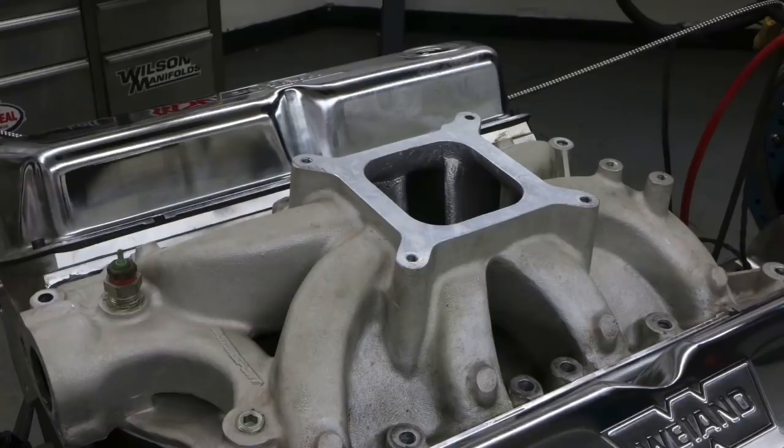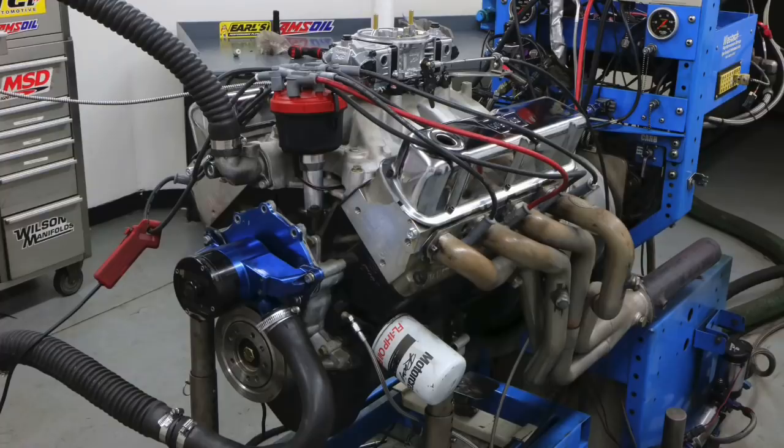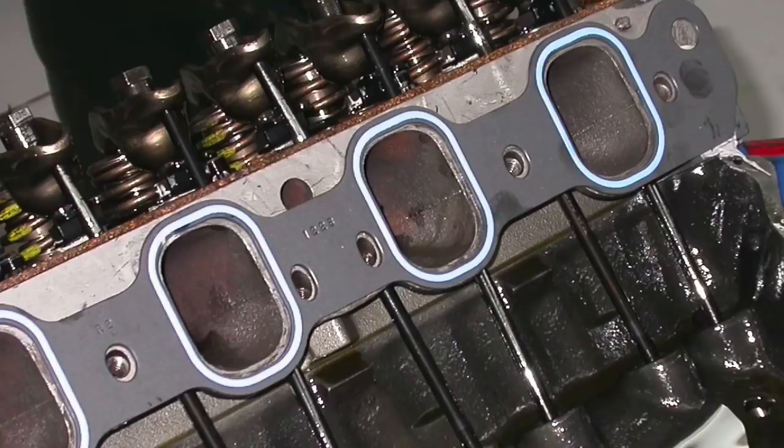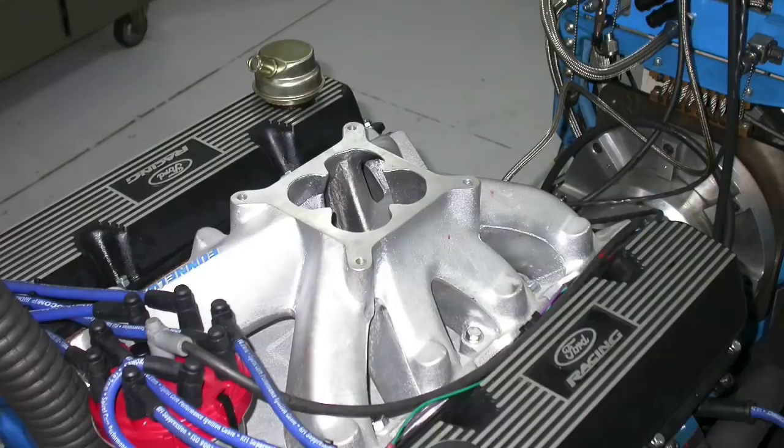In this video, we're going to take a look at the age-old question single plane versus dual plane on two different Ford motors. First of all, we ran a single plane versus a dual plane on a mildly modified 351 Windsor. Then we ran a single plane versus a dual plane on a mildly modified 4V Cleveland. Now we know the Cleveland has more head flow. So here's my question. Which one of these combinations is going to like the single plane? Which one of these combinations is going to like the dual plane? Why are we asking all these questions? Let's get to the answers.